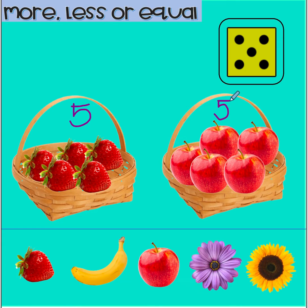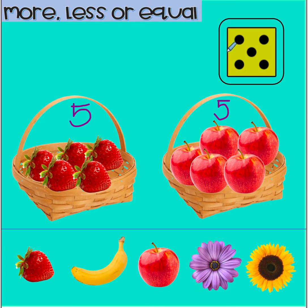Five apples. Now which basket do you think has more fruits? Is it the basket with five strawberries or the basket with five apples? Which has more? What do you think? That's right! The two baskets have the same amount or number of fruits — five strawberries and five apples. They have the same number, five and five. So that means they're equal. The two baskets are equal and have the same amount of fruits. Good thinking. Now let's do another one.